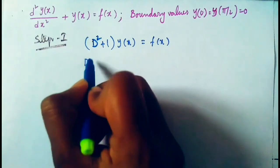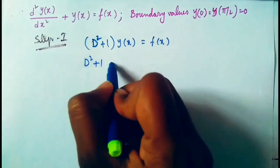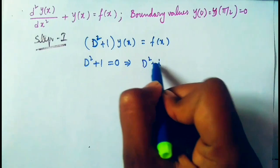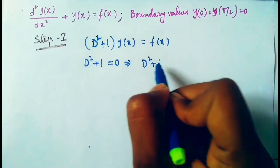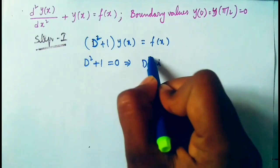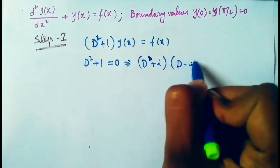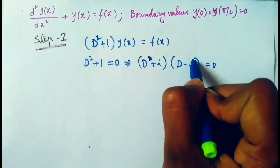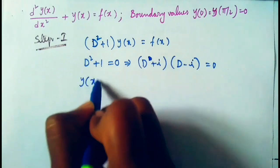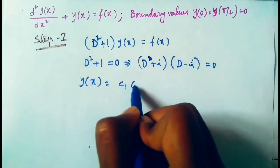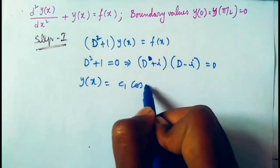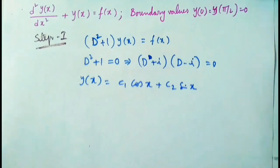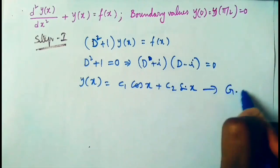The solution is found as D² + 1 = 0, that is (D + i)(D − i) = 0, so the general solution is y(x) = c1·cos(x) + c2·sin(x). This is the general solution.